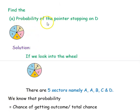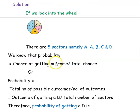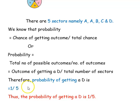Next question: find the probability of the pointer stopping on D. If you look into the wheel, you have totally 5 sectors namely A, A, B, C and G. We know the formula for probability: chance of getting the outcome divided by total chance. The outcome of getting D — you have only one D sector. So the possible outcome for D is 1 and the total number of sectors is 5. Therefore the probability of getting D is 1 divided by 5. Hope you have understood all the questions well. Thank you for watching the video.